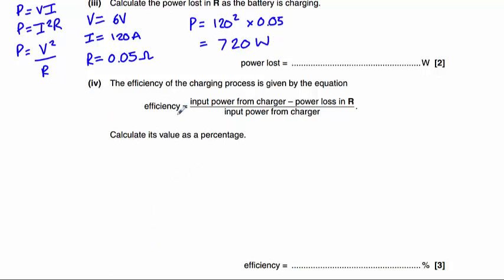Finally, part four, the efficiency of the charging process is given by the equation. Efficiency is input power from charger, take away power loss in R, divided by the input power from the charger. So we know the power loss in R, that is 720, but we're not sure what this input power from the charger is.